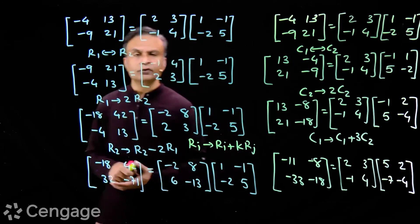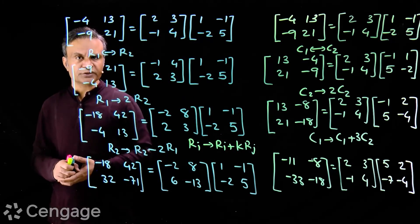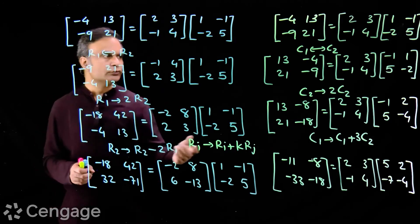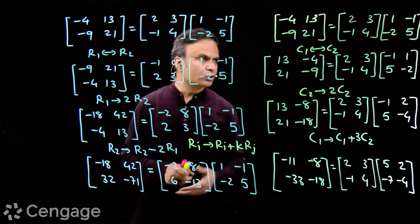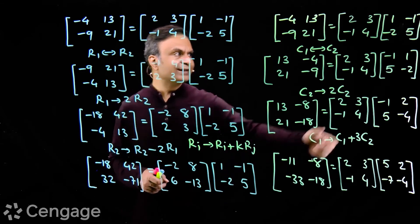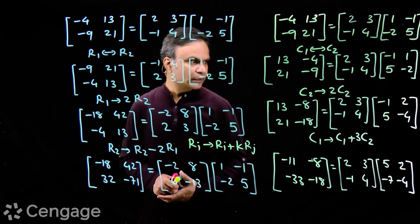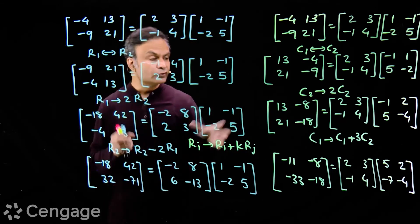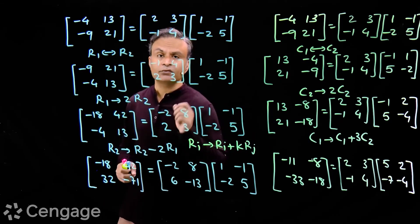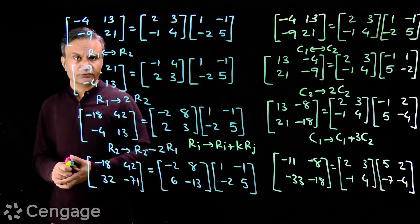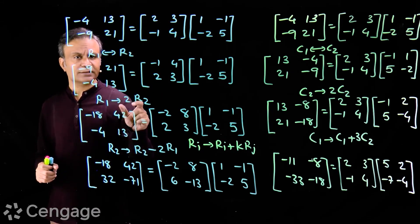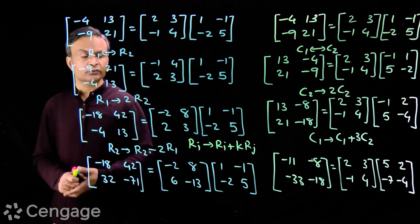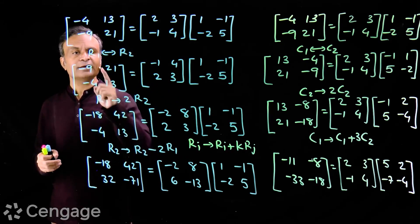So what is the finding? If you want to do a row operation or row transformation, do it in the pre-multiplier matrix. Now what is the use of this? Using this we can find the inverse of a matrix without using the definition A inverse = adjoint of A divided by mod A. We can find the inverse of a matrix.